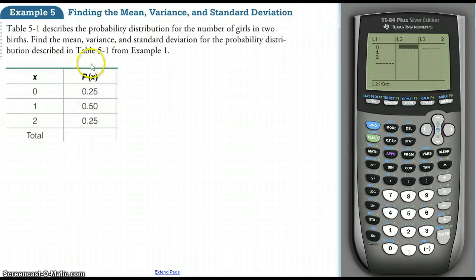Then I'm going to go to my L2 and that's where I'm going to put my corresponding probability value. So the first one is point two five, enter, the second one is point five, enter, the last one is point two five.